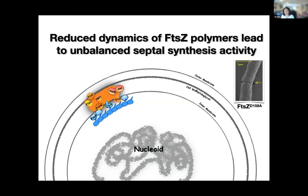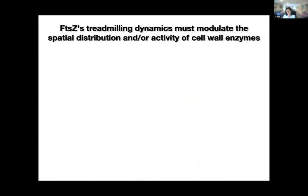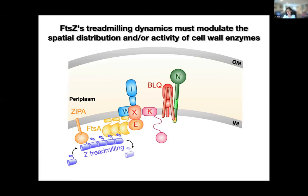If FtsZ doesn't move — if GTPase activity has been decreased — then FtsZ will stay in one place and all the enzymes would stay there too, resulting in a highly asymmetric synthesis of the septum. For example, on one side you have deep constriction but on the other side you have very shallow constriction. When you make the cell wall very asymmetric, you end up with this abnormal septum formation.